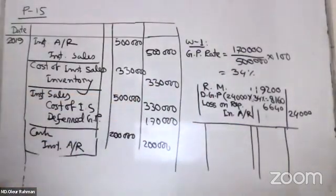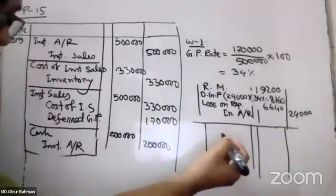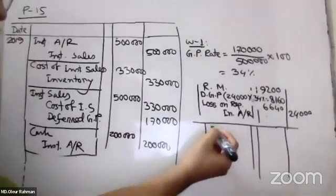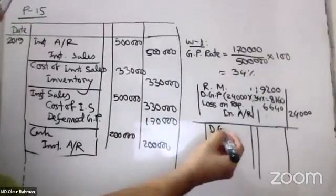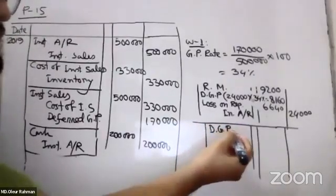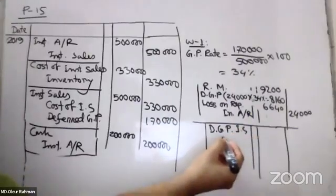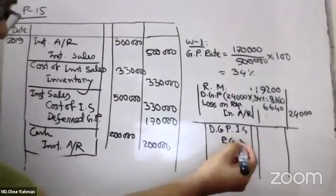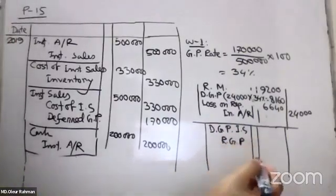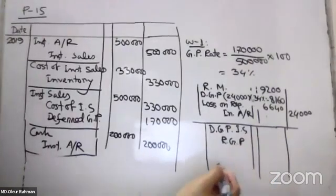Gross profit will be realized. Realized gross profit on instrument sales debit and realized gross profit on instrument sales debit.